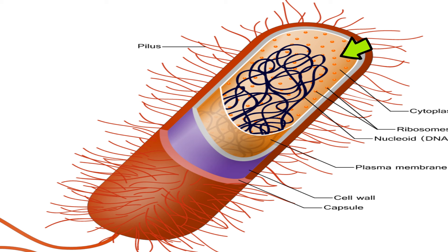You will also find ribosomes inside a bacteria. Some are found in the cytoplasm and others are attached to the inner layer of the capsule or the cell membrane.